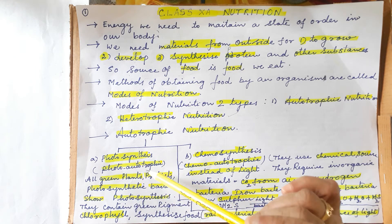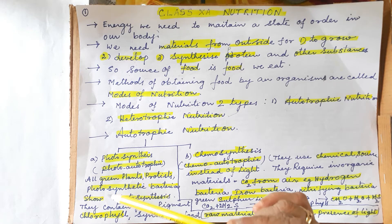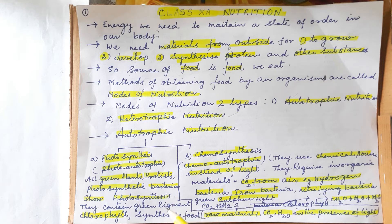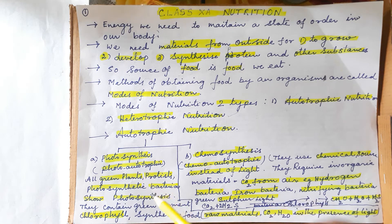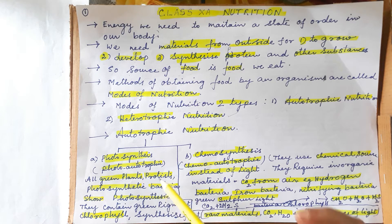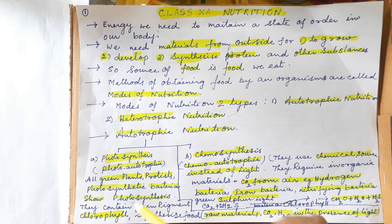Examples of organisms that perform photosynthesis: all green plants — 'green' is compulsory because the green color is present in chlorophyll, which allows them to capture light energy from the sun and synthesize food. Also, protists — unicellular organisms from last year's classification — and some photosynthetic bacteria that also have green pigment can perform photosynthesis.